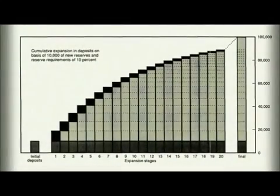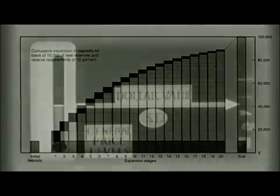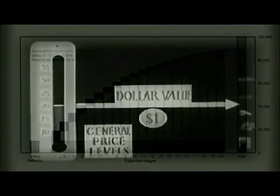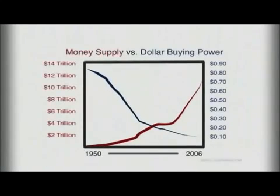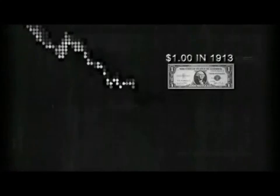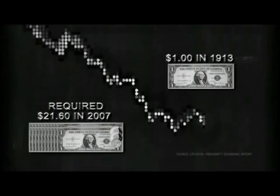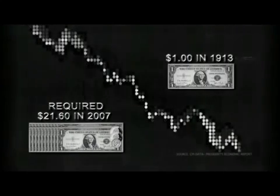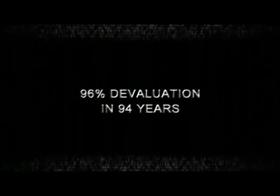For the act of expanding the money supply without there being a proportional expansion of goods and services in the economy will always debase a currency. A quick glance at the historical values of the US dollar versus the money supply reflects this point definitively, for the inverse relationship is obvious. One dollar in 1913 required $21.60 in 2007 to match value — a 96% devaluation since the Federal Reserve came into existence.